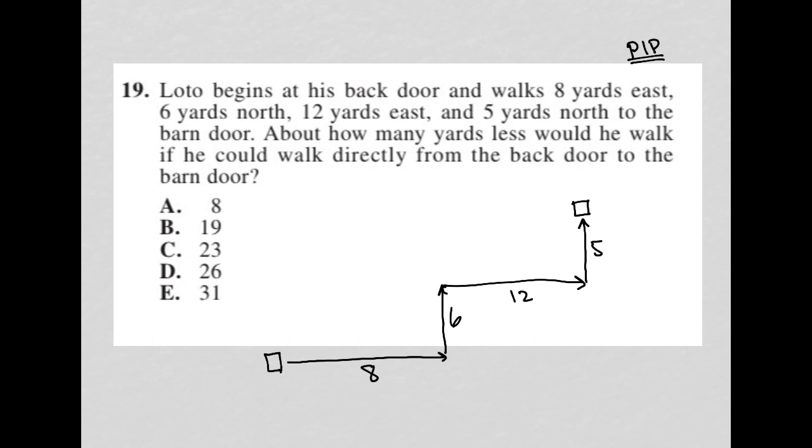About how many yards less would he walk if he could walk directly from the back door to the barn door? I'm going to first figure out how many yards did he walk in the first place. So there's eight yards here plus an additional six north. That's eight plus six is 14, plus 12 is 26, and plus five is 31. So he walked 31 yards if he goes the direction provided by the question.